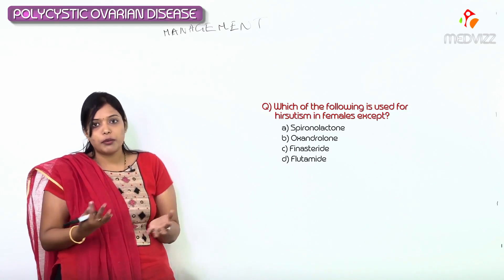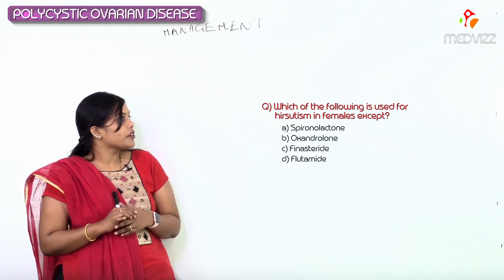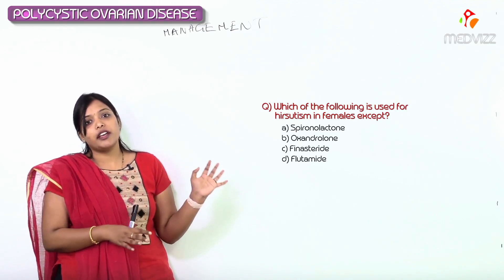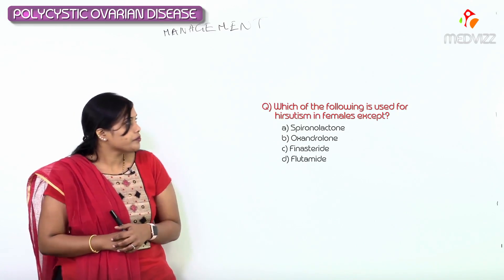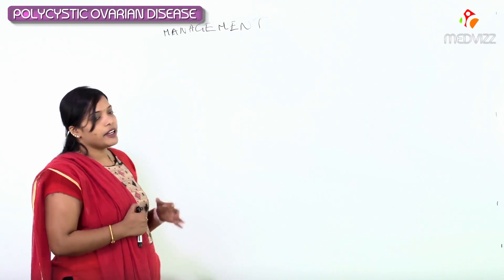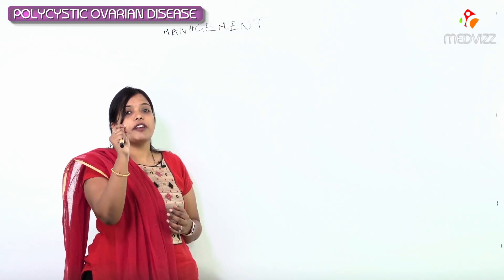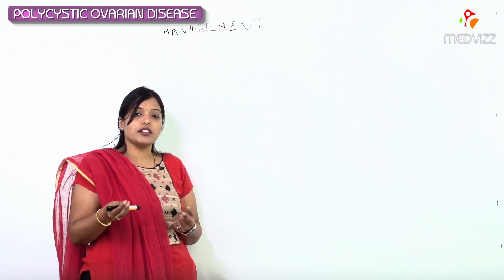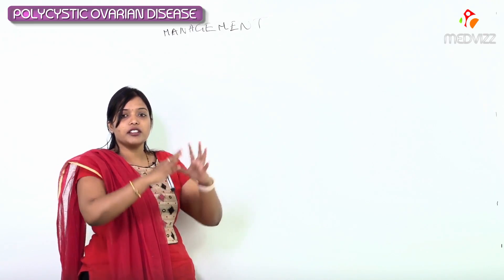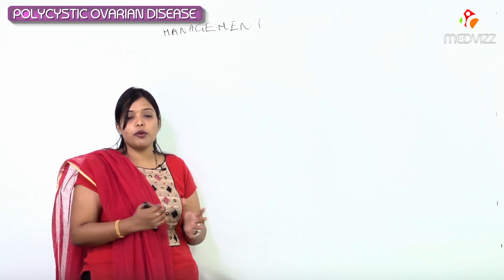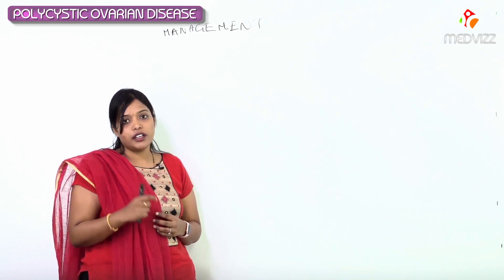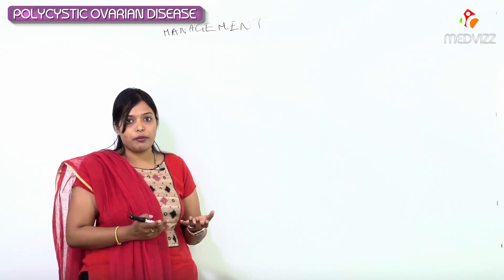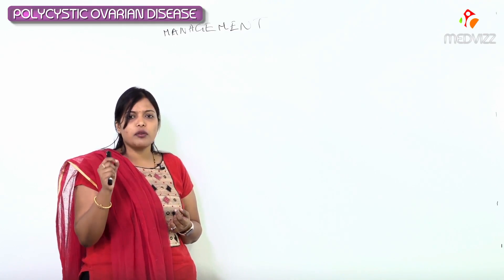I want all of you to think of an answer. I'll come back to this after the management discussion. Now, in the management, what are the two basic things going wrong? The first villain is insulin — insulin is the one causing everything, making PCOS become worse and worse.